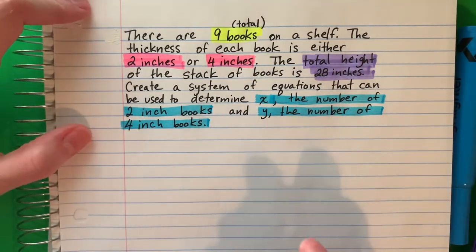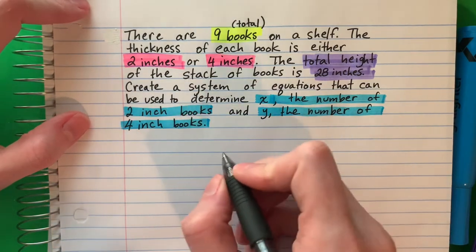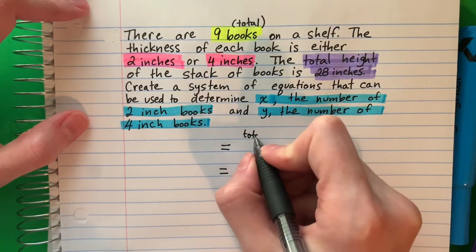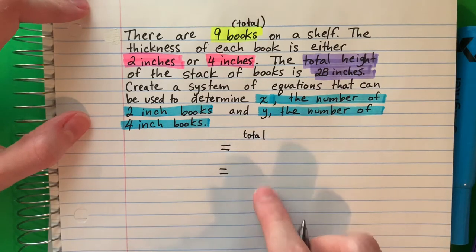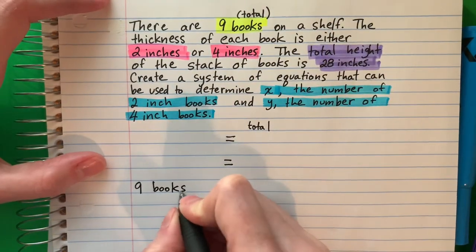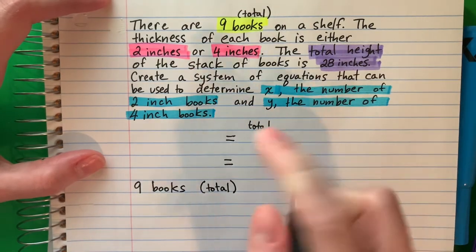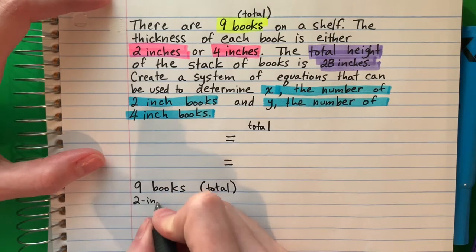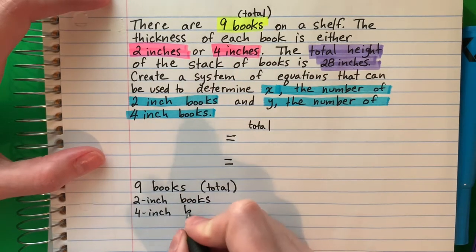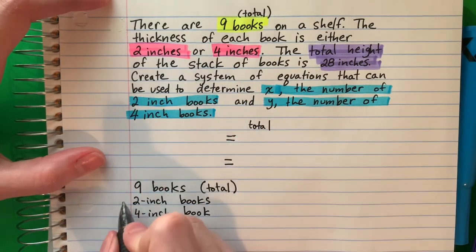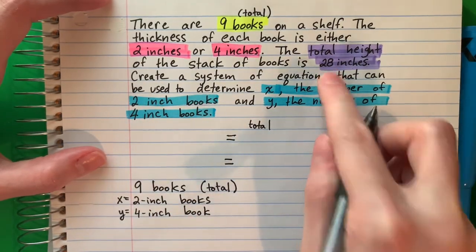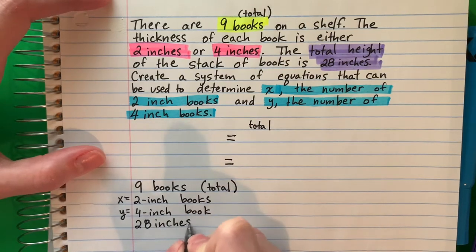I'm going to create an equation. I'm going to have two equations, so I'm going to have two equal signs. Remember, the total always goes on the right. I have nine books, and that's a total. I have two-inch books and four-inch books, and they said x is two-inch books and y is four-inch books. And I have 28 inches, and that's a total.